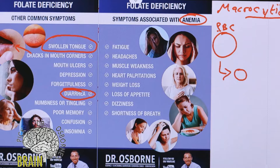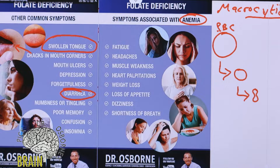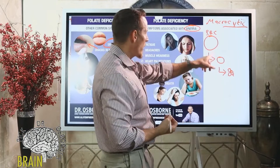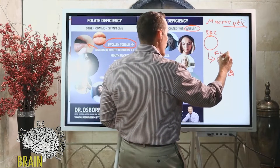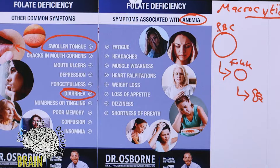As a red blood cell matures it gets smaller, takes on a different shape, the cell nucleus goes away, and we get hemoglobin instead — giving us that little disc shape. That disc carries oxygen and carbon dioxide. Folate is critical for taking that very large red blood cell and helping it mature to a properly sized red blood cell that can carry oxygen.